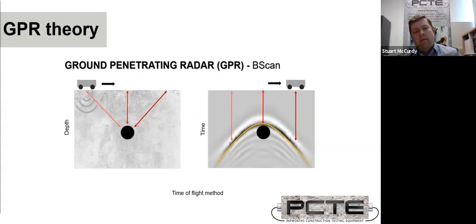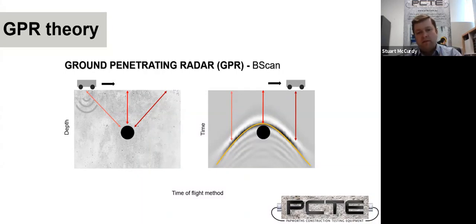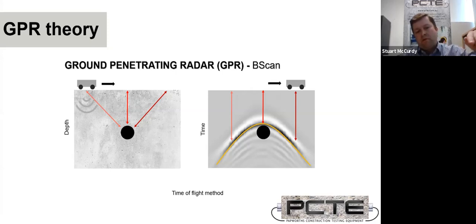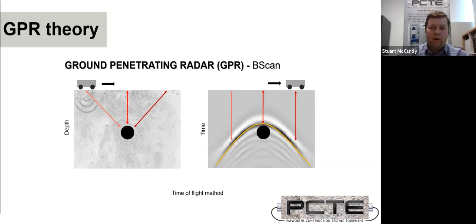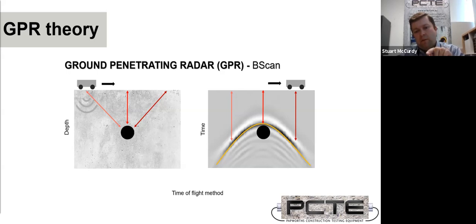A bit on theory. We're sending GPR signal into concrete and measuring the length of time it takes for that signal to hit targets and come back. When scanning perpendicular to a steel bar, as we approach it, the signal travels a greater distance to hit the bar and return than when directly on top of it — that's why we get that hyperbola shape. The midpoint at the top is the top of the rebar, and those tails are caused by that greater distance of travel as you approach and run over the bar.